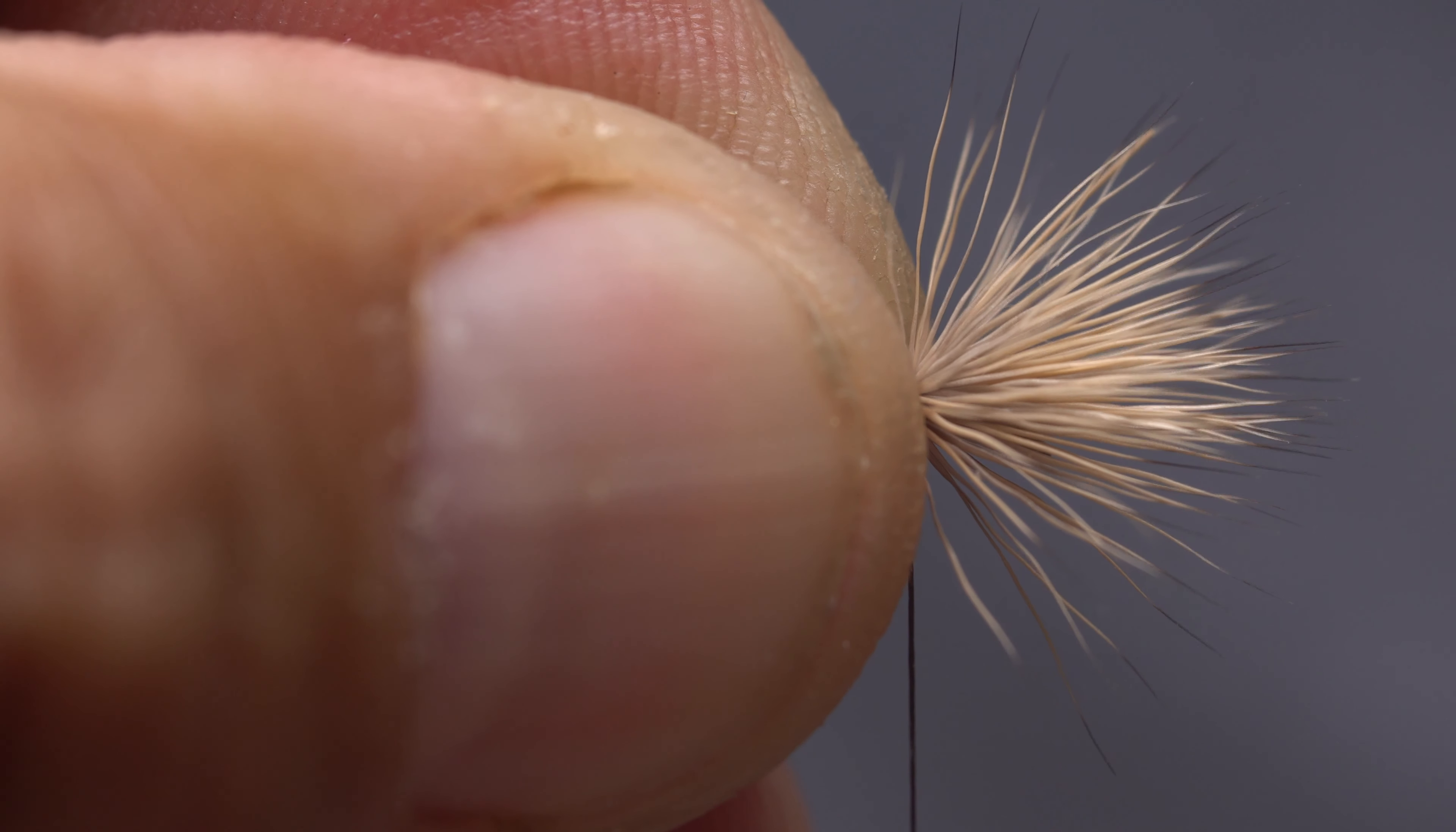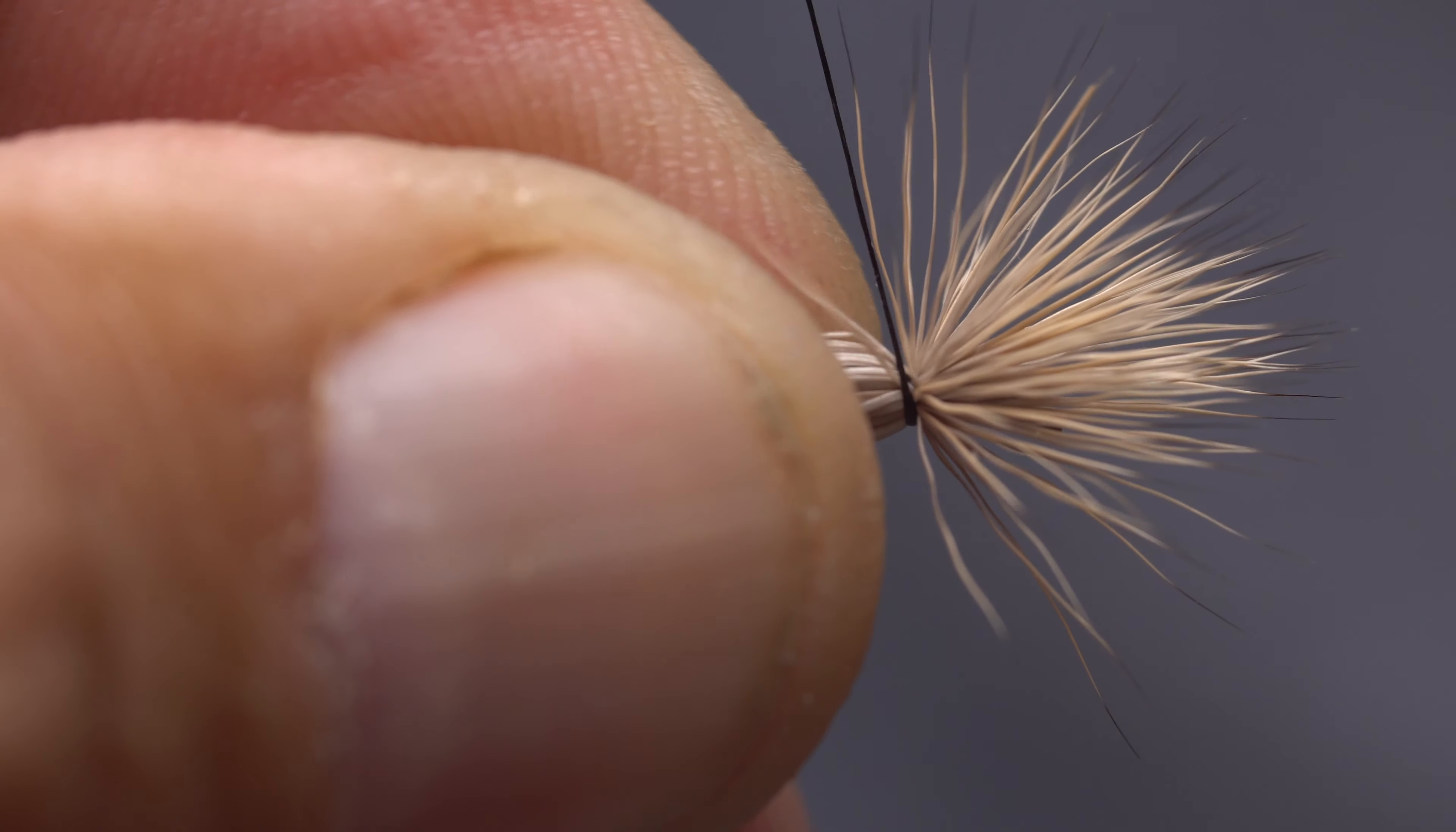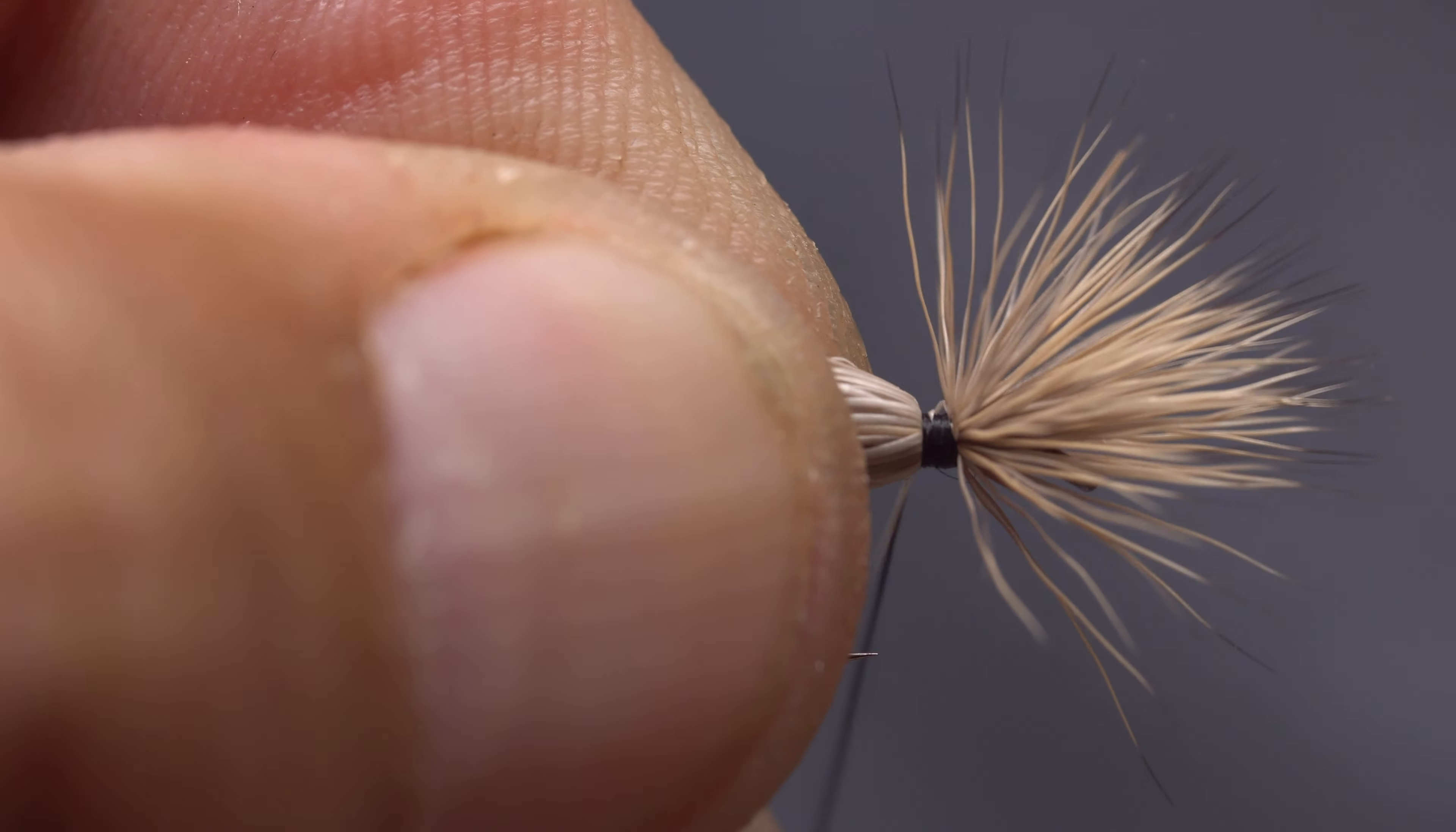If your deer hair choice is correct, the hair should flare about like this. While continuing to pinch, move your fingers back on the clump and take a few more tight thread wraps rearward. Keep doing this until the hair no longer wants to spin around the hook shank.